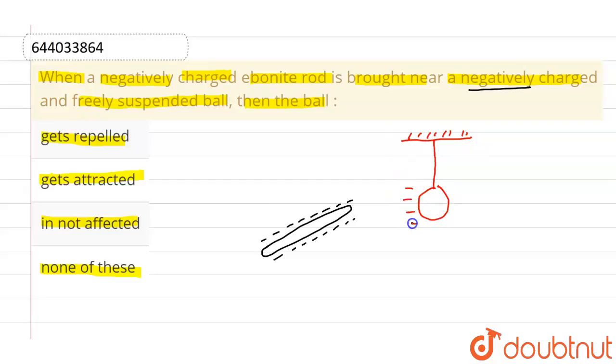Like charges repel each other. Now, since both the bodies - the ebonite rod as well as the ball - have the same